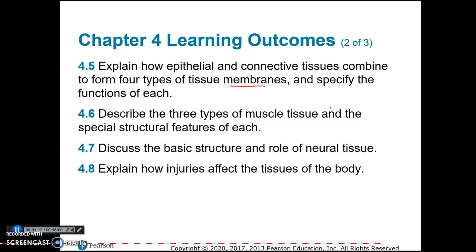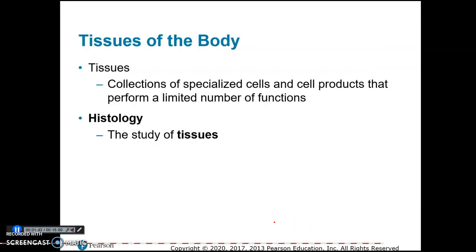The different types of membranes — the other one, by the way, is mucous membranes — are formed from epithelial and connective tissues together, which are the first two tissue types. The last two tissue types are muscle tissue, with three subtypes, and nervous or neural tissue. We will also talk about how injuries and aging affect tissues.